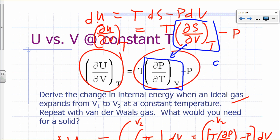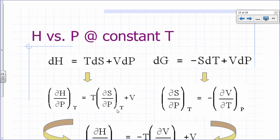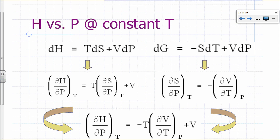The Maxwell relation we used was based on the expression for dA, which is minus S dT plus V dP. We can do likewise for the dependence of H on pressure.